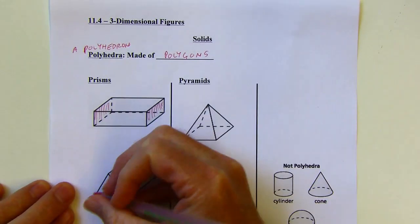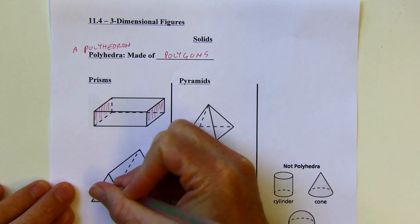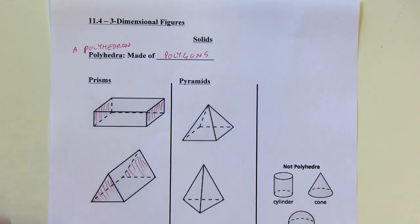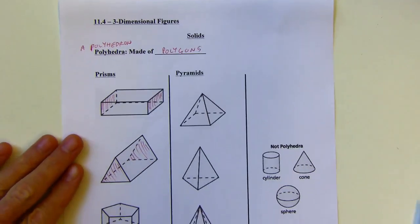Likewise, with this one that looks kind of like a tent, I could cut this up like a loaf of bread, give everybody a triangular slice that's the same size and shape.